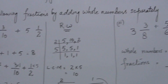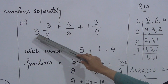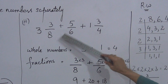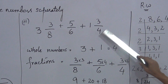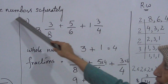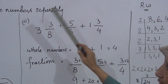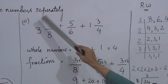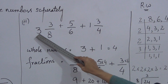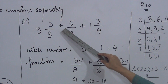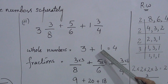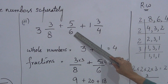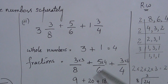Now we will use the same method to solve question number 3. In question number 3: 3 whole 3 upon 8, plus 5 upon 6 (no whole number here), plus 1 whole 3 upon 4. Separate the whole numbers: 3 and 1, so 3 plus 1 equals 4. The fractions are 3 upon 8, 5 upon 6, and 3 upon 4.